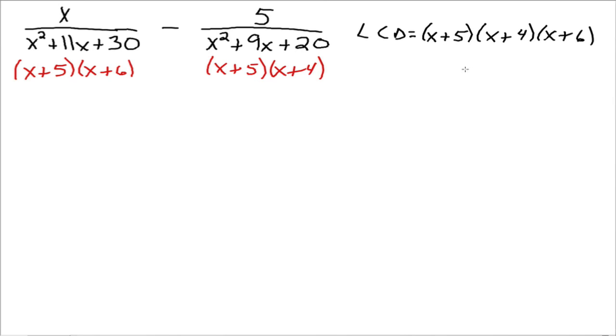Alright, if you write it this way, now we can figure out what we need to multiply top and bottom of each fraction by. So this first fraction, we need to multiply the top and the bottom by x plus 4, that's right. So we'll have x times x plus 4 over our LCD x plus 4, x plus 5, and x plus 6.